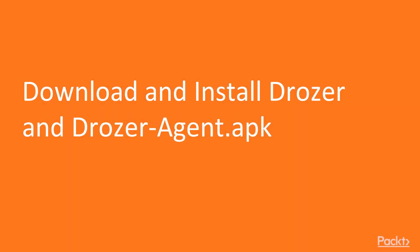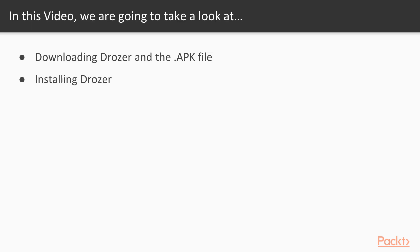In this video we are going to take a look at a couple of points. First, we will learn how to download drozer and its APK file, and then how to install drozer inside Windows operating system. We need to download both files — drozer as well as drozer.apk — from the internet. Open google.com to download these files.